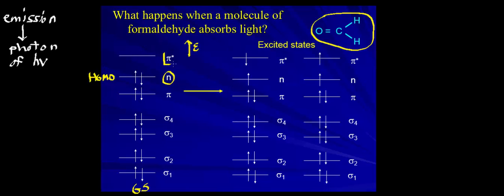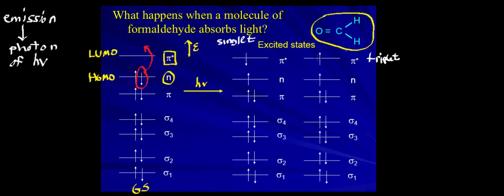Looking at the pi-star orbital, if you go up and up, all orbitals are empty — so this is the lowest unoccupied molecular orbital, or LUMO. We now have the HOMO and the LUMO. When formaldehyde is exposed to photons of light, the molecule can absorb that light, and an electron from the HOMO gets promoted into the LUMO. This gives us a singlet excited state or a triplet excited state.